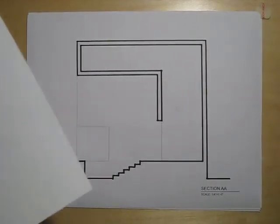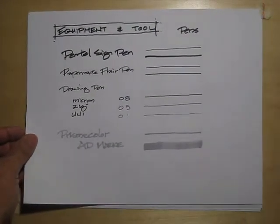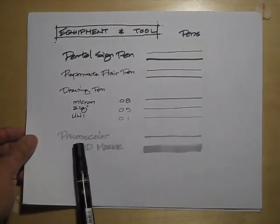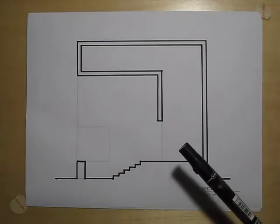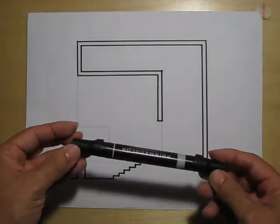So while explaining the equipment and tools that we needed, I did mention a Prismacolor marker, this light gray, or actually a neutral gray 30%.